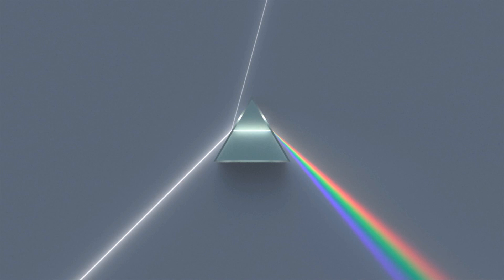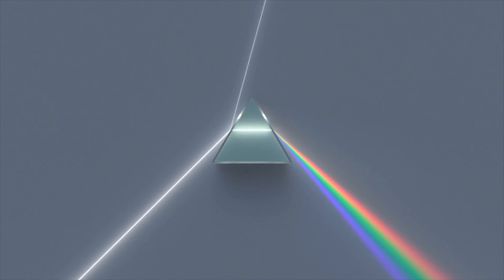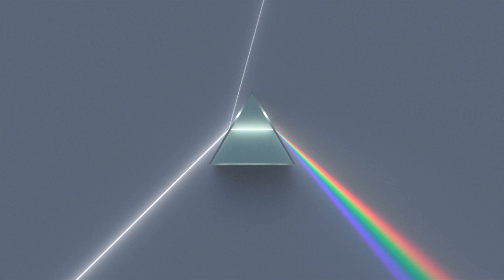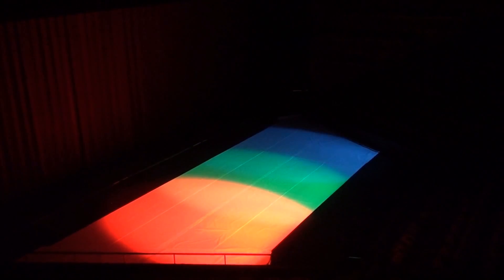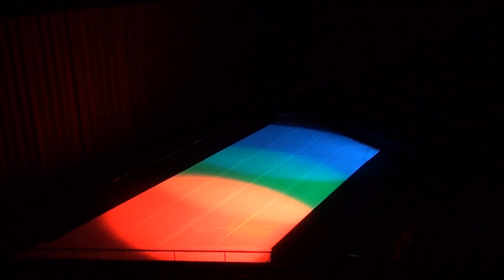Similar to Isaac Newton using his glass prism, we are splitting the white light into separate wavelengths. The gels filter out certain wavelengths and only allow other wavelengths to pass through. In theater, we can manipulate the eye into seeing many different colors, just by varying mixtures of color in relation to the objects on stage.